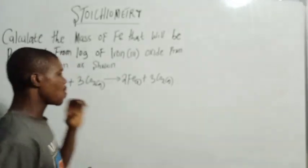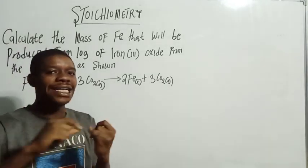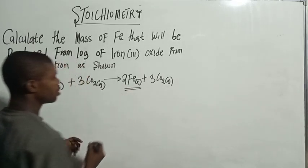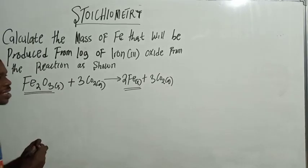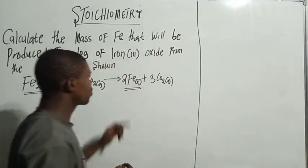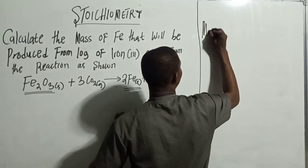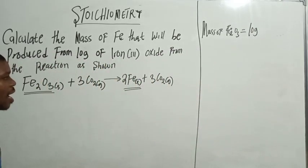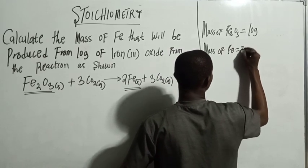So how do we solve this type of question? When you see this kind of question, there are two main things to look at: the mass or moles of the substance given to you, and the one you are calculating for. For example: calculate the mass of iron that is produced from 10 grams of iron(III) oxide, Fe₂O₃. So our point of focus is on these two substances — iron and iron(III) oxide.